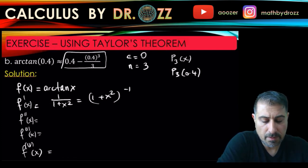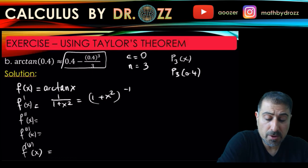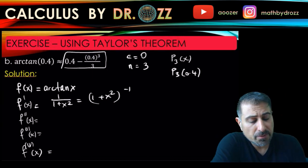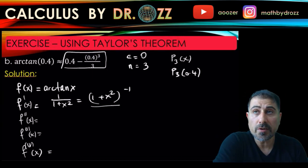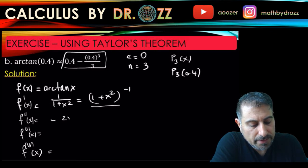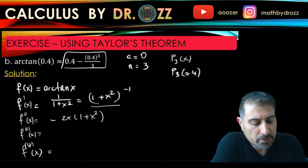f(x) is arctangent x, and by using the derivatives formula, the derivative of arctan should be 1 over 1 plus x squared. I'm going to write this in power form so that I can use the generalized power rule. So it's minus 2x times 1 plus x squared to the power of negative 2.